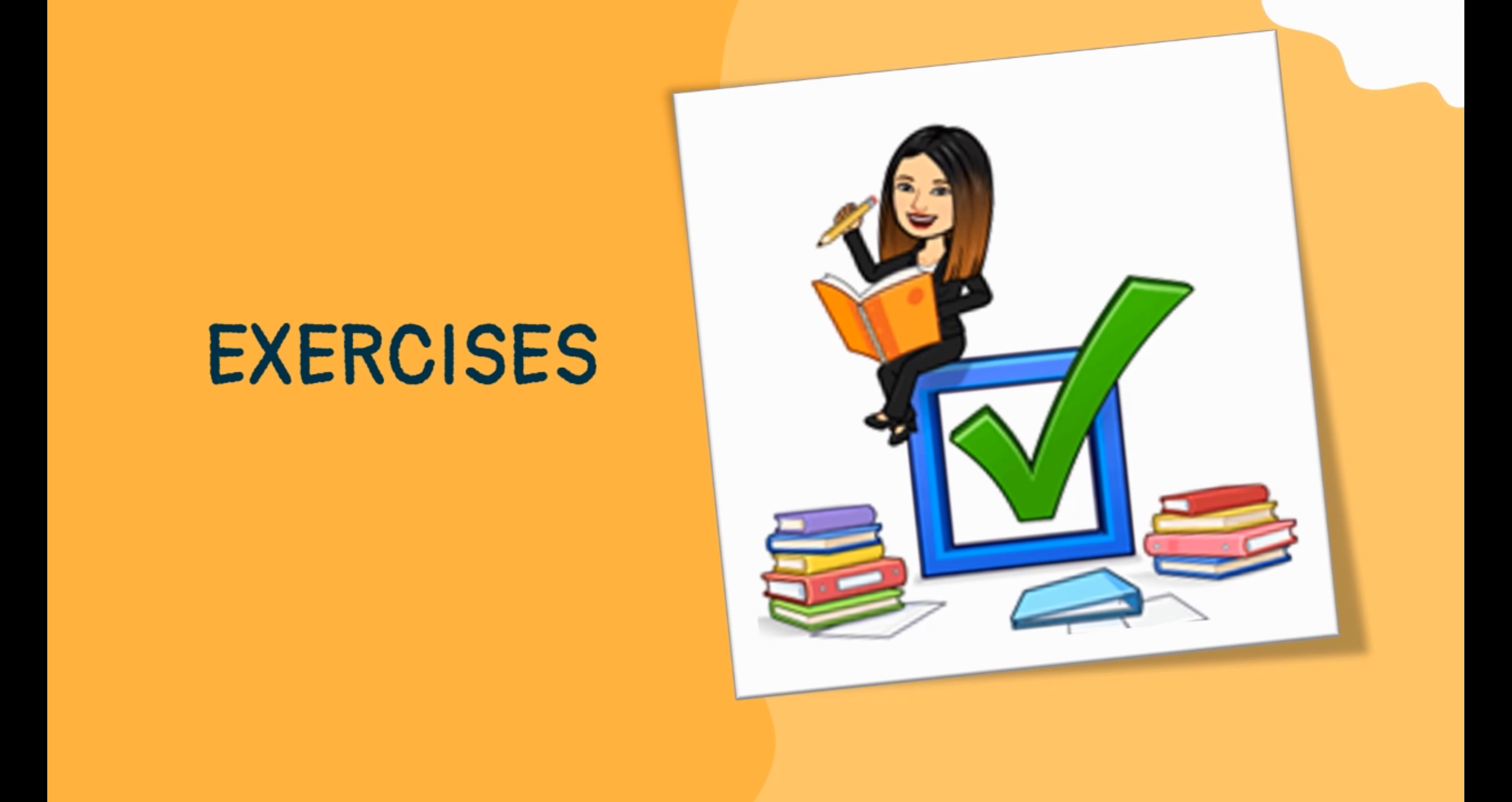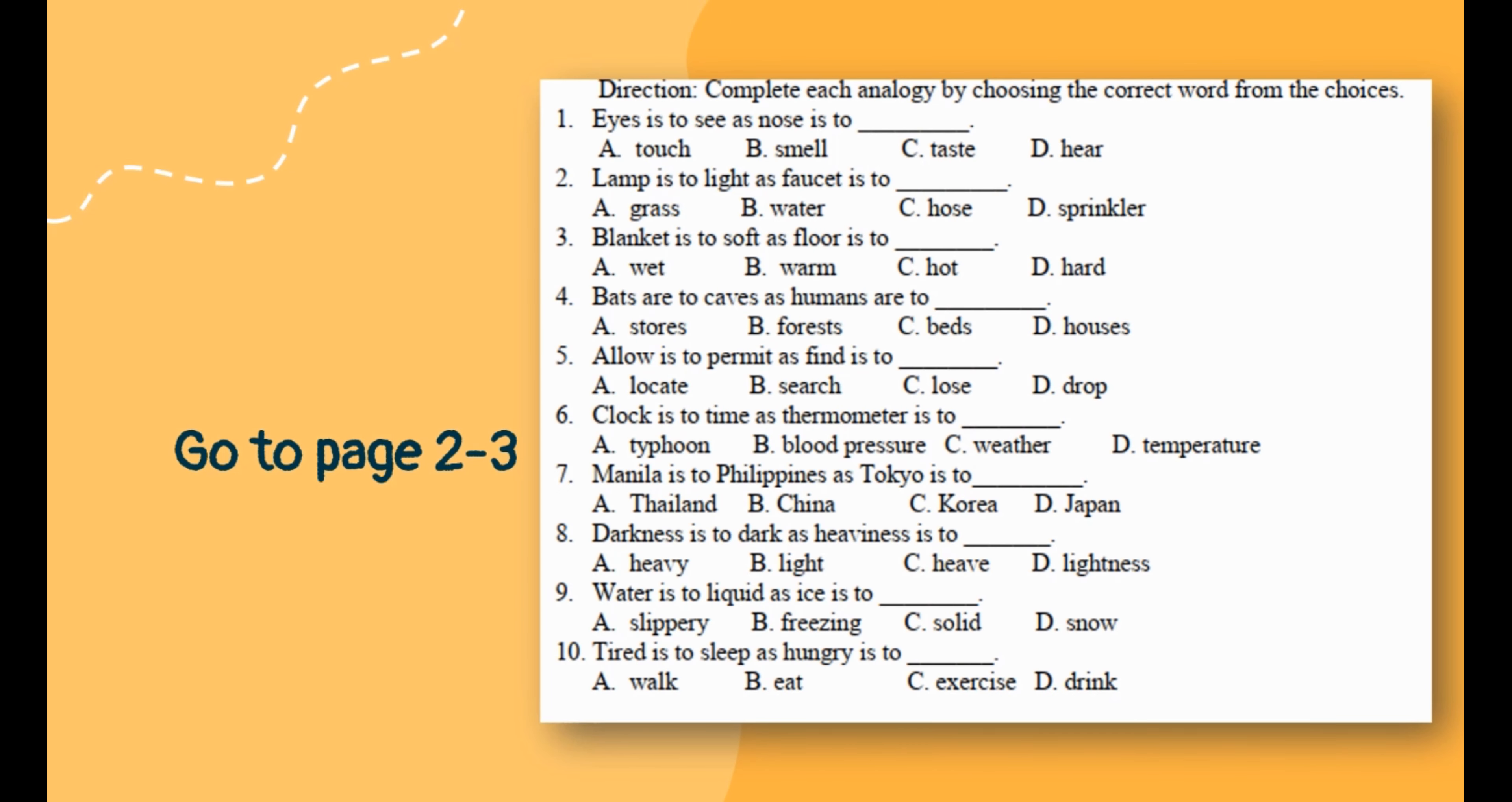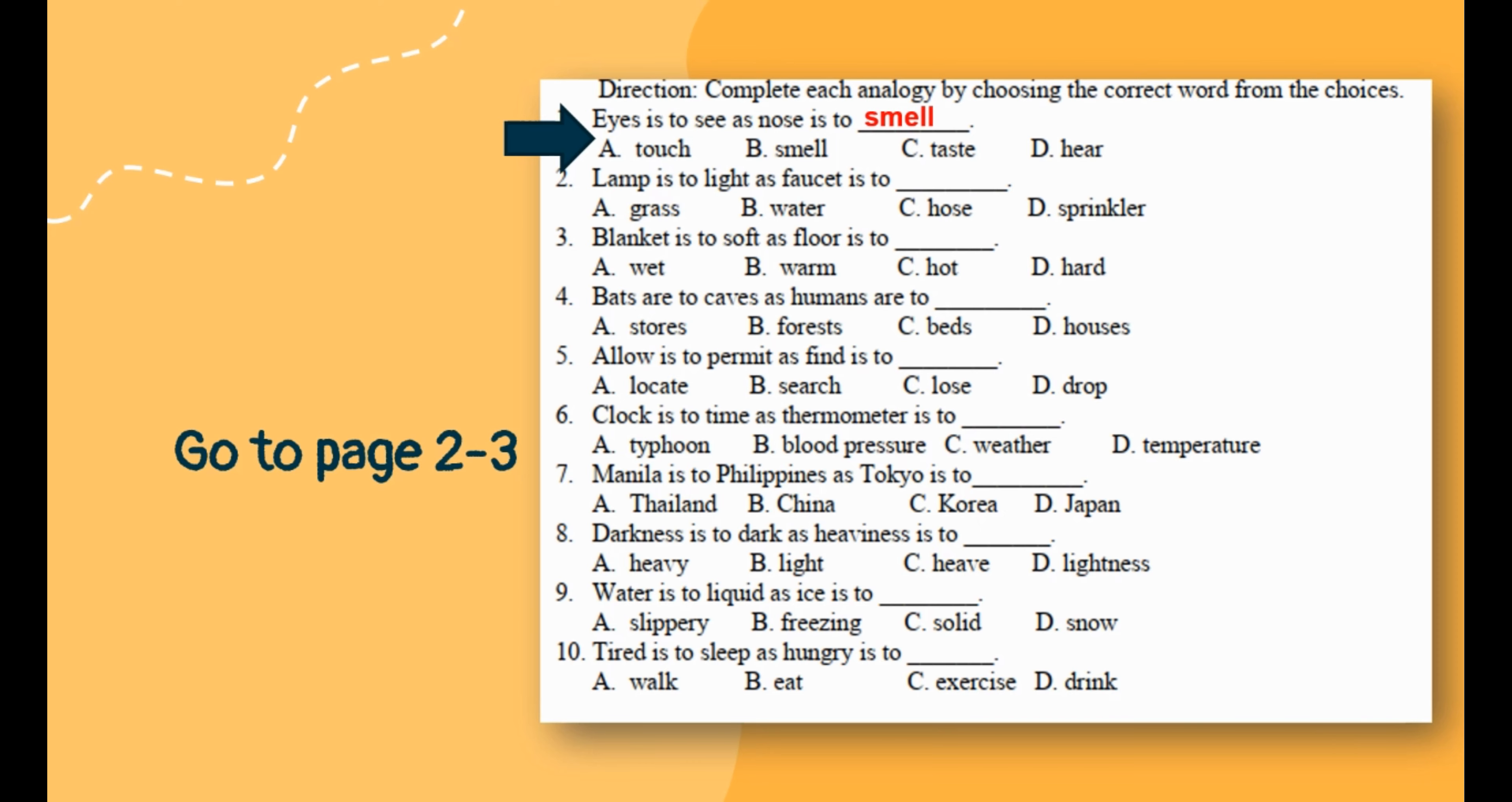Let's apply what you just learned by doing some exercises. Go to page two to three of your home task. Complete each analogy by choosing the correct word from your choices. Example, number one: eyes is to see as nose is to blank. A: touch, B: smell, C: taste, D: hear. The correct answer would be smell. Are you ready to answer the rest? Let's go.